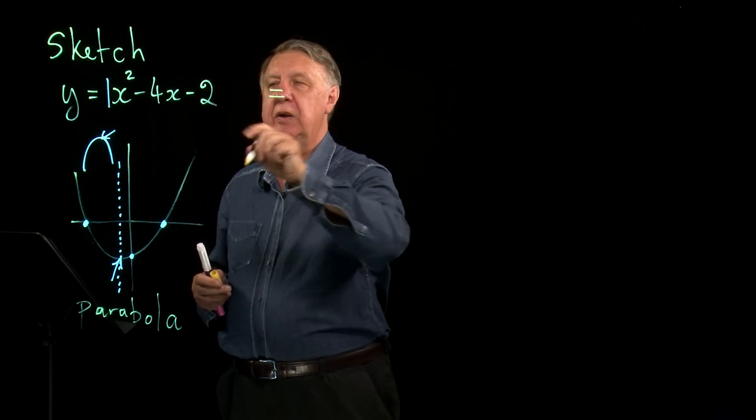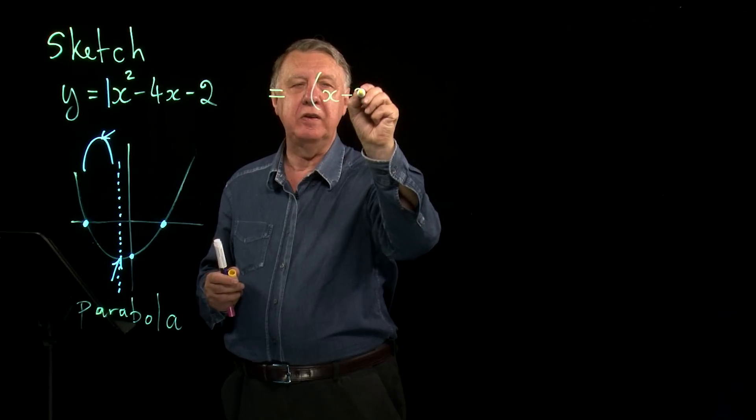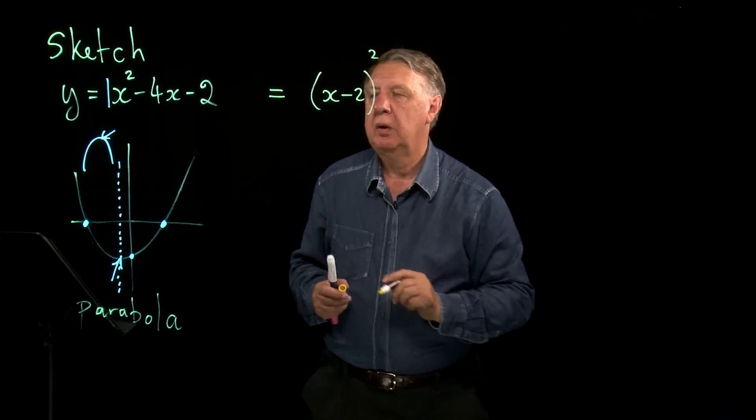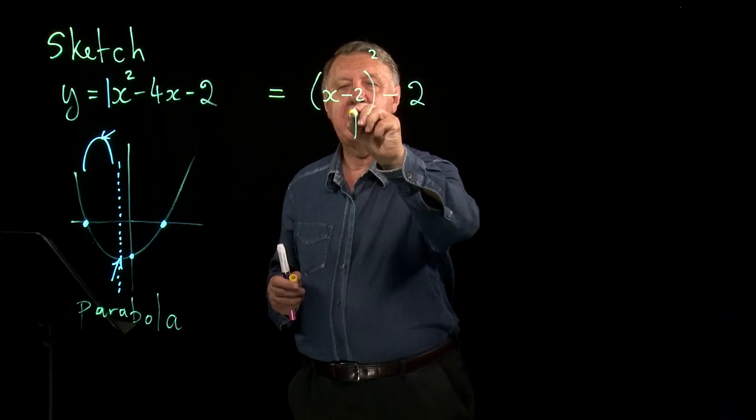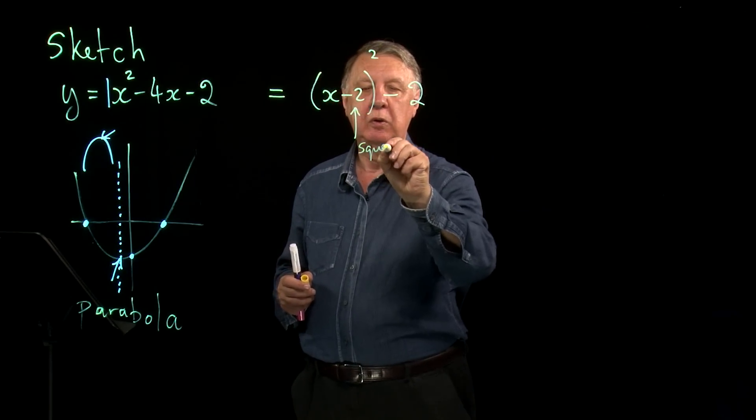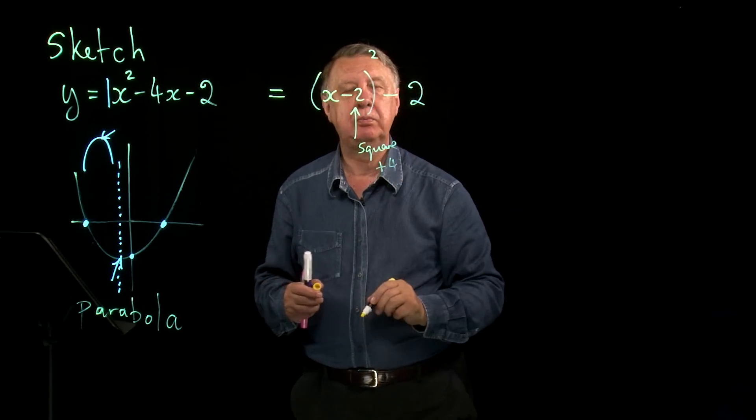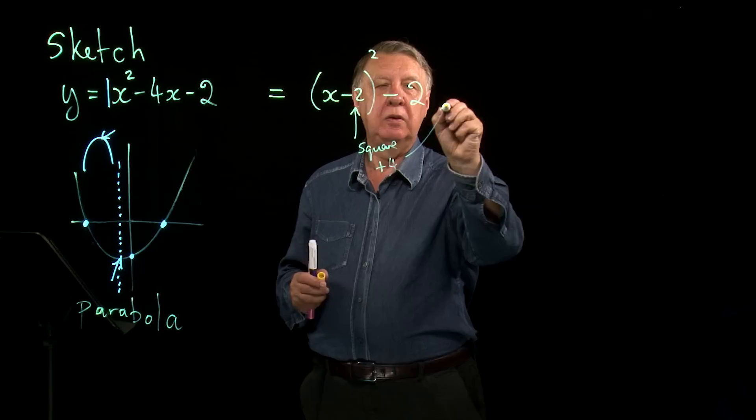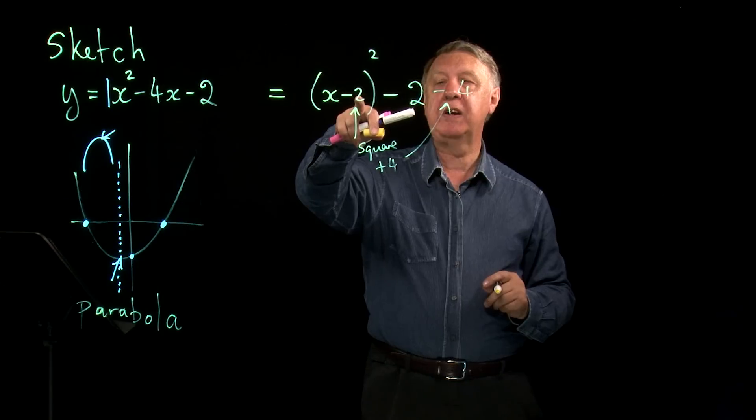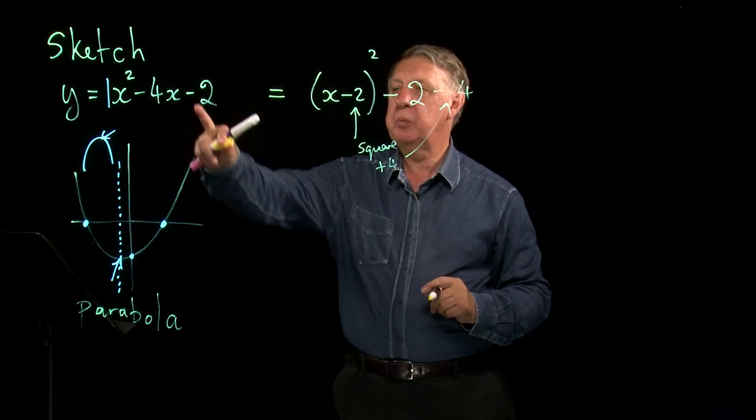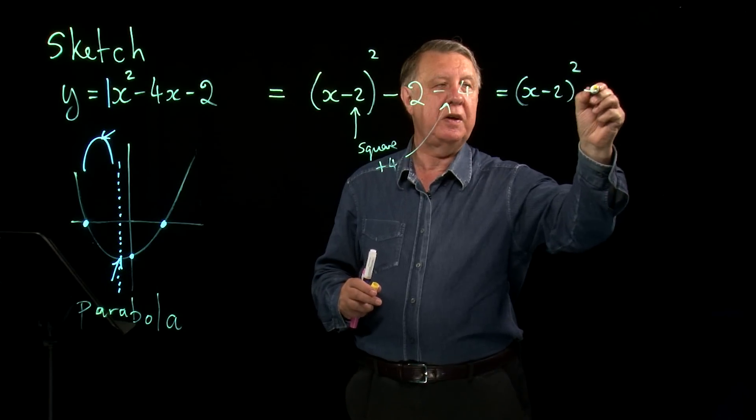So first of all then we complete the square. So remember what we have to do. You halve this number of x's. So negative 4 halved is negative 2. The negative 2 is still there. You then square that number. Square negative 2 is plus 4. And you subtract that again because we don't want it there. We've introduced it. We want to get rid of it again. So when we complete the square we end up with x minus 2 squared take away 6.